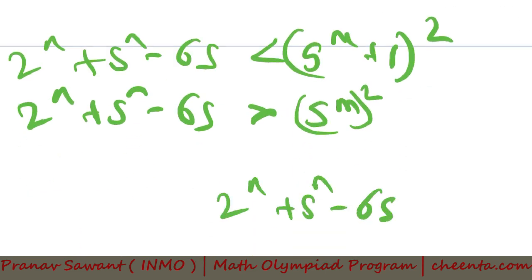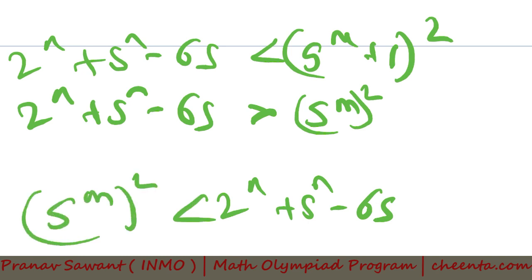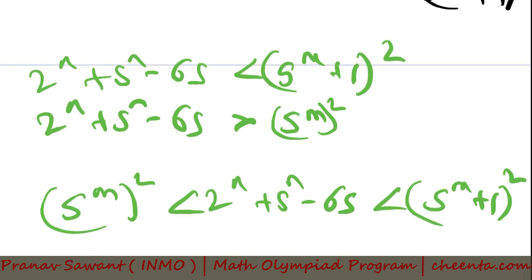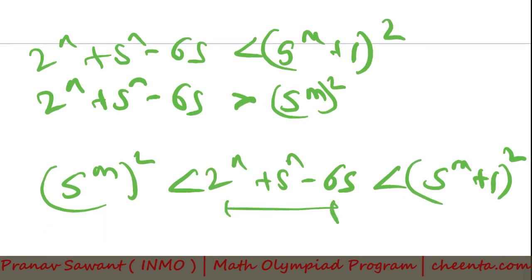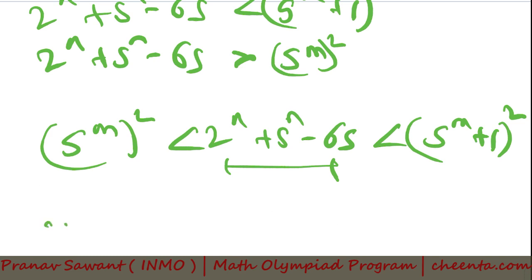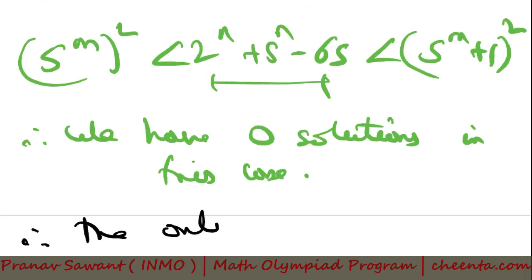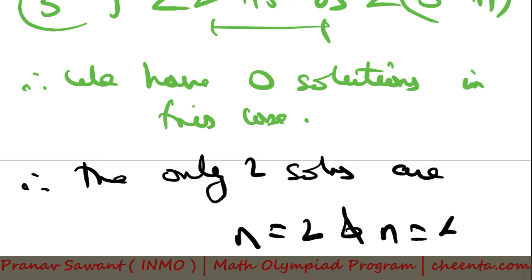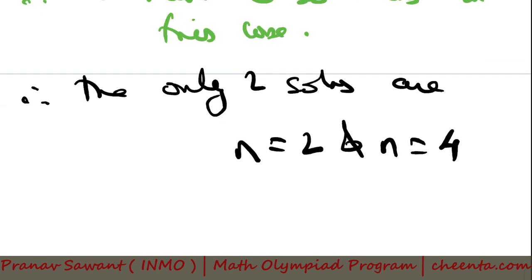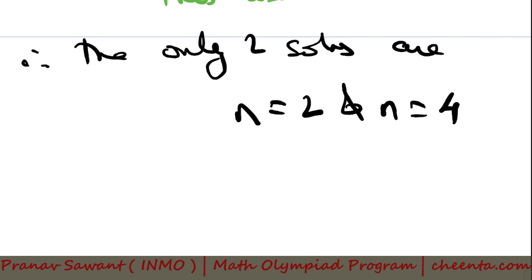In other words, 2^n + 5^n − 65 lies strictly between two consecutive perfect squares — (5^m)² and (5^m + 1)² — and therefore this can never be a perfect square. Therefore we have zero solutions in this case. So the only two solutions are n = 2 and n = 4.